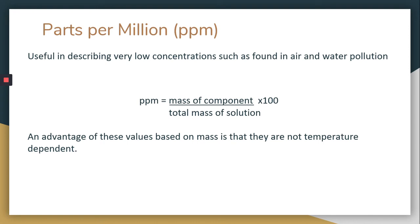Sometimes you might see concentration done in parts per million. So this is useful when we describe very low concentrations found in air or water pollution. So typically you only see this in environmental chemistry. But it's the mass of the component divided by the total mass of the solution times 100. So it's kind of like a mass ratio. And since it's done by mass, then temperature, it doesn't matter what the temperature is because it's not dependent on it.